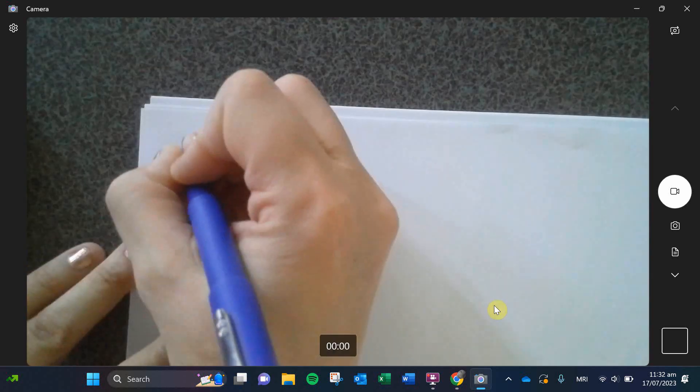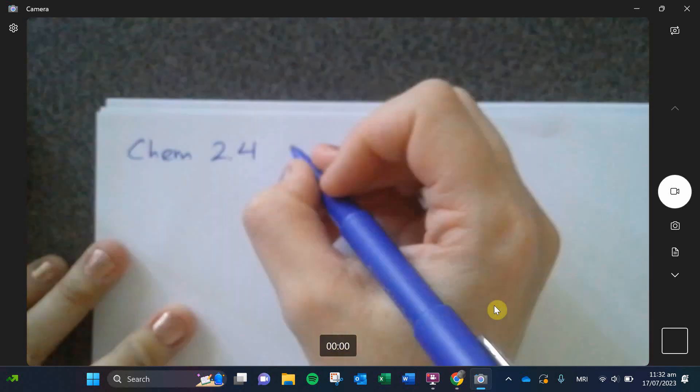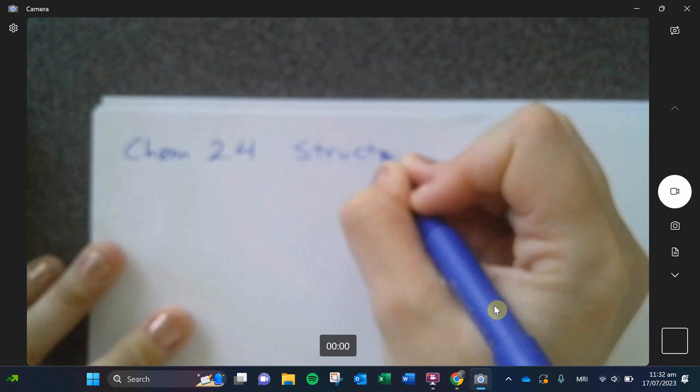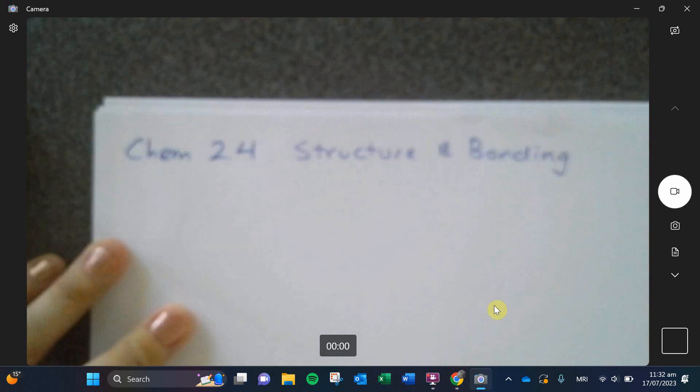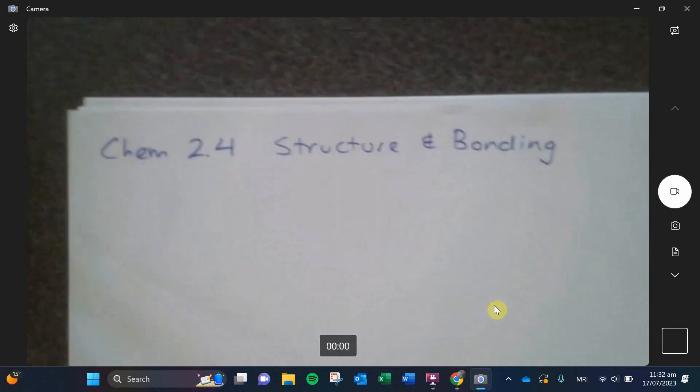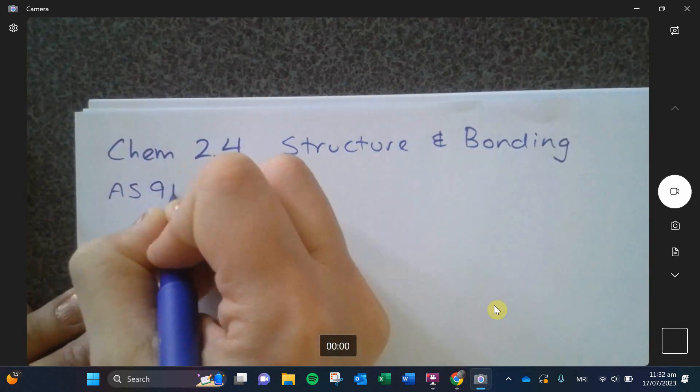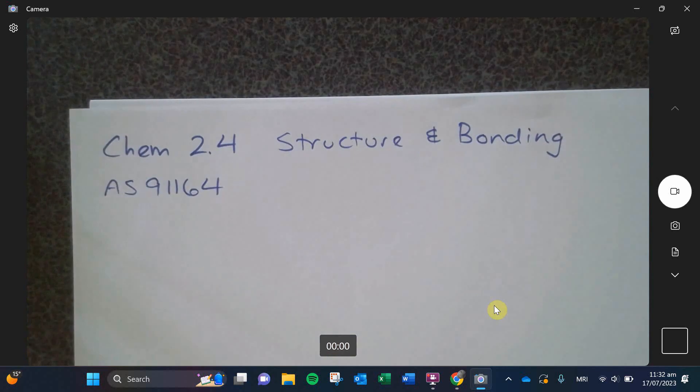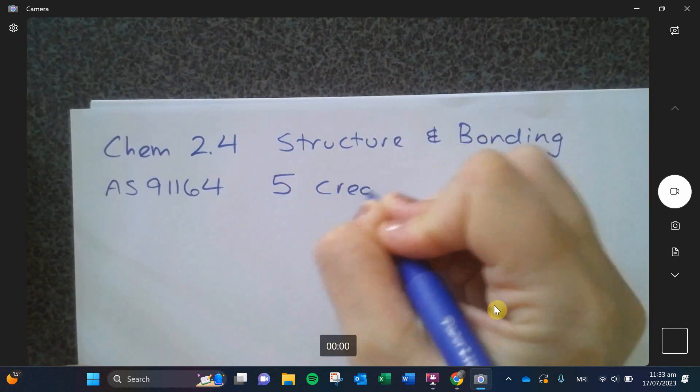So first thing I want to do is talk about structure and bonding and what it is as an assessment. This is Chem 2.4, known as structure and bonding. If you were looking up the AS number, it is 91164. This external is worth a little bit more than the other two chemistry externals. This one's actually worth five credits, which is quite nice.